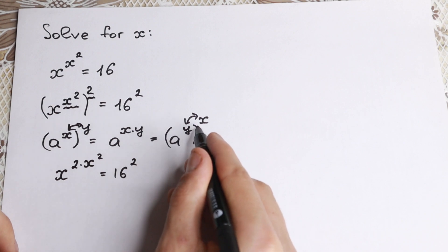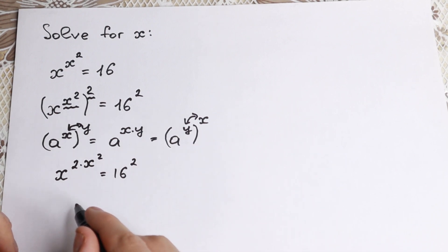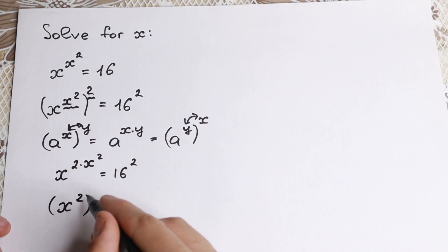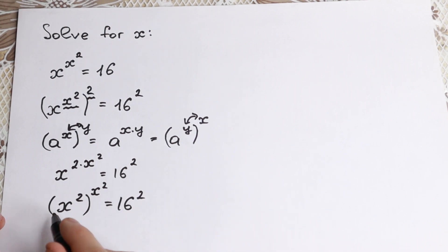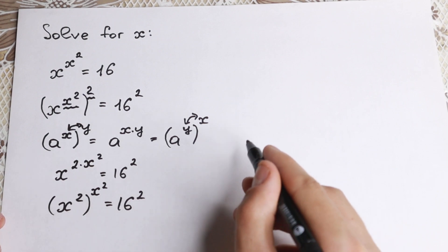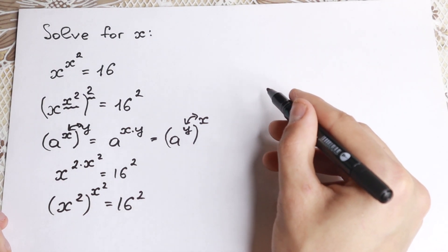So we multiply and right now we can easily swap these powers. So we can write it as x squared raised to the power x squared equal to 16 squared. So this is the main difficulty right here. I hope you understand this step. If you understand this step, the next step will be easier for you.